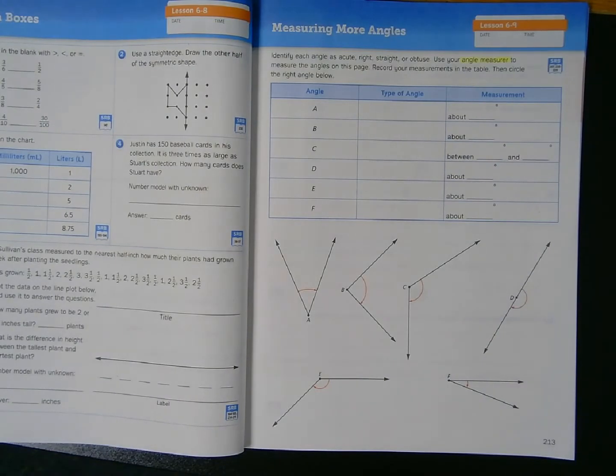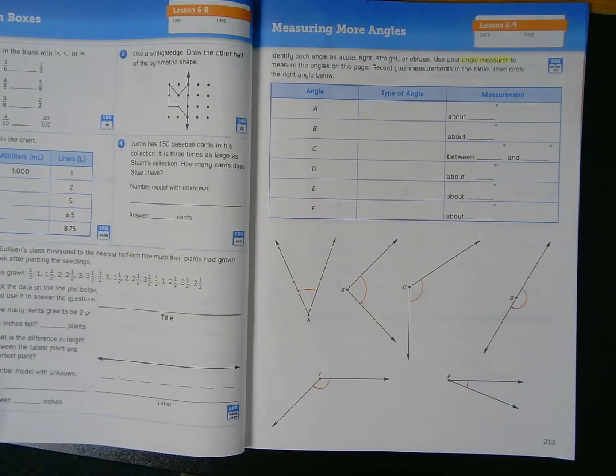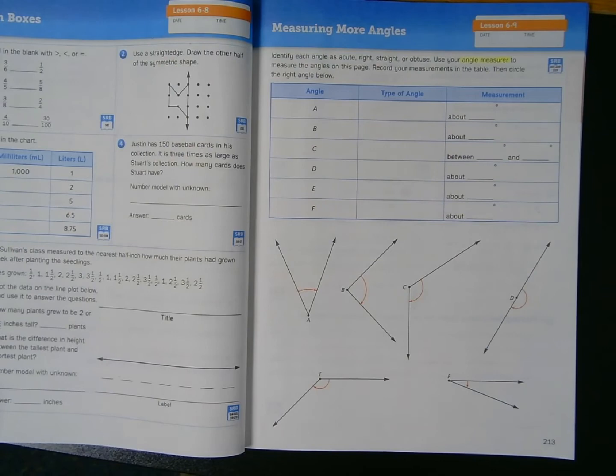Well, hi boys and girls. It's Mr. Waftsman and today, once again, we're going to be looking at angles. I'm in my math journal, volume 2, on page 213, unit 6, lesson 9, Measuring More Angles.